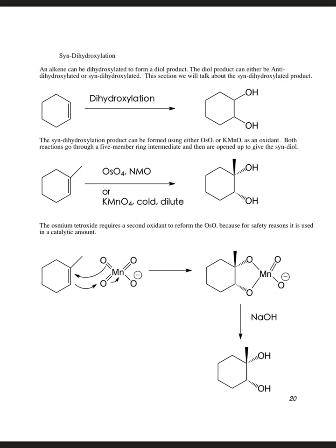The other option is syn-dihydroxylation, using either osmium tetroxide or potassium permanganate. The basic mechanism is the same for both: the pi bond grabs an oxygen, electrons go down to the metal, one of the oxygens breaks a bond forming a five-membered ring with the metal. Then we cleave off the metal with base or an oxidant to give the syn-dihydroxylation. The only part of the mechanism you really need to worry about is this first part, where both oxygens add at the same time — and since they add simultaneously, they must be on the same side, giving syn addition.